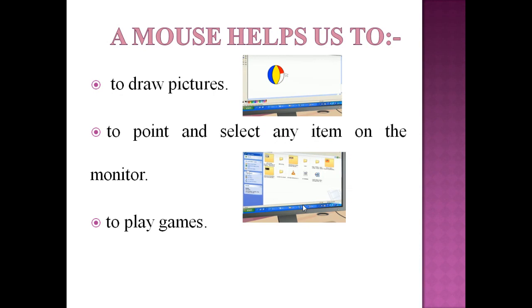Now, we will learn how it is useful to us. It is used to draw or color pictures on the screen. A mouse is used to select and point any item on the monitor. We also use the mouse to play games on computer.